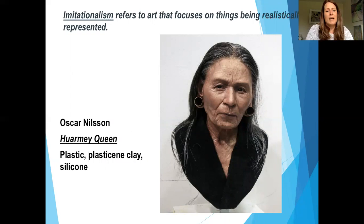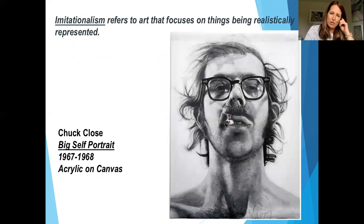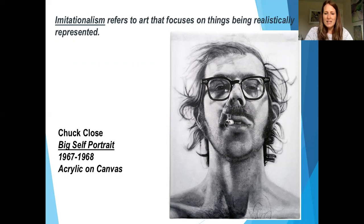Some examples of imitationalism would be this piece by Oscar Nilsson. Imitationalism is artwork that really stresses things being realistically represented, so you'll notice the artist is trying to capture every little detail. This is actually a sculpture created out of plasticine clay — kind of like modeling clay — and silicone to create all of that realistic detail. Another example of imitationalism is a painting by Chuck Close titled Big Self-Portrait. Look at all the details he has incorporated: the wispiness of the hair, the reflection in the glasses. All of that detail makes this look almost like a photograph, but it is actually a painting.